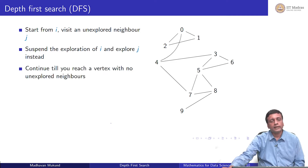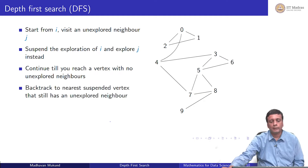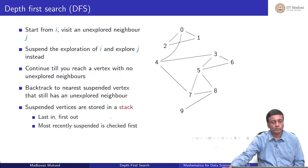When I reach a vertex through this process which I cannot explore any further, I come back along the path I have taken and find the first point where there was another choice for an unexplored vertex. So you backtrack to the nearest suspended vertex that still has an unexplored neighbor and then explore that neighbor, and so on.